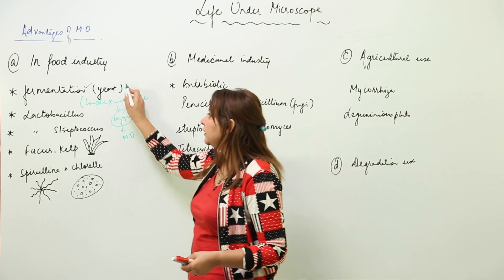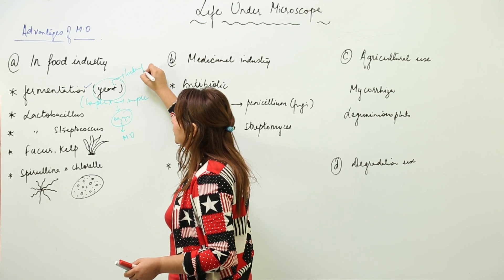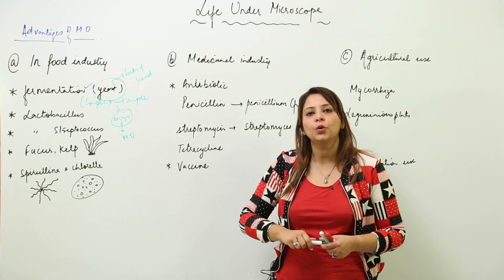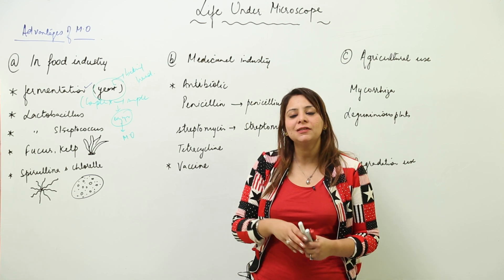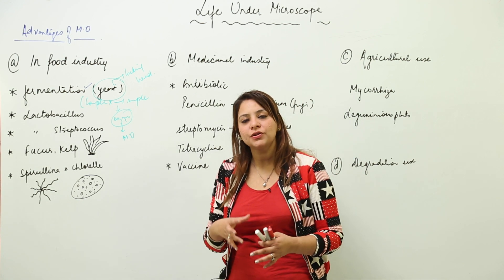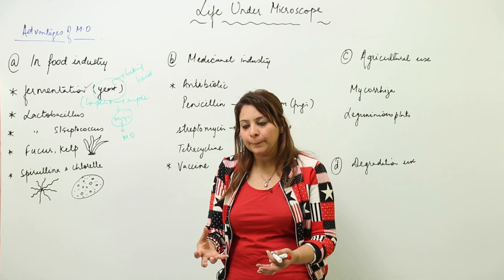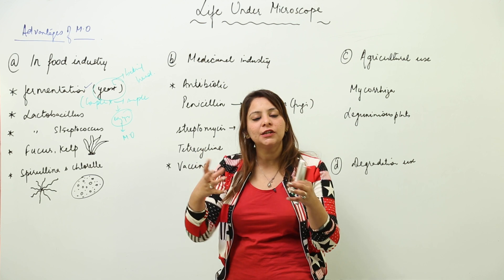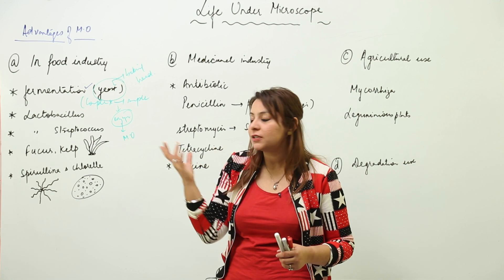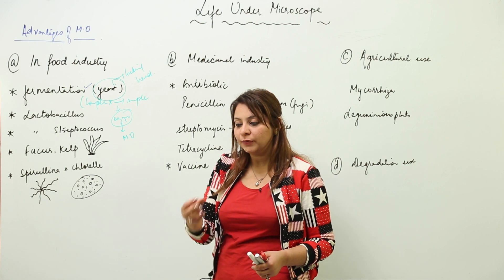For example, yeast is used in baking bread. When we make a dough, we add yeast to it. Yeast releases CO₂, which gets trapped in the dough. When we process it, the CO₂ escapes, creating holes that make the bread fluffy and spongy.